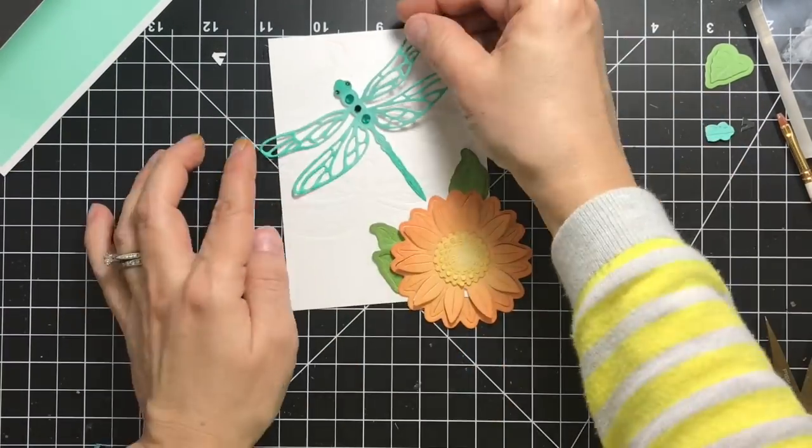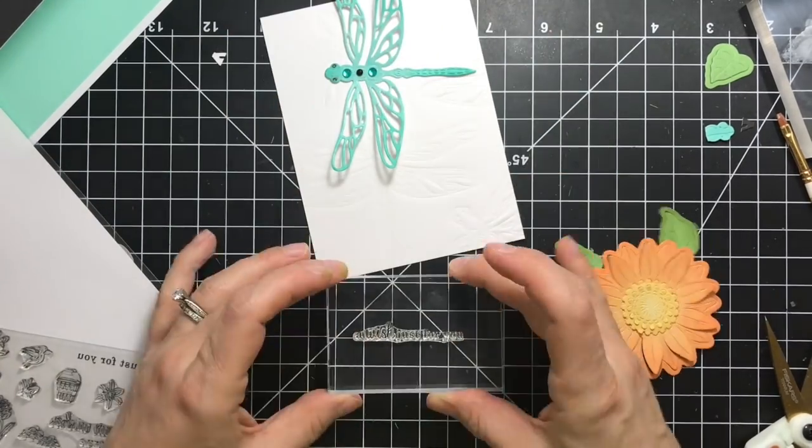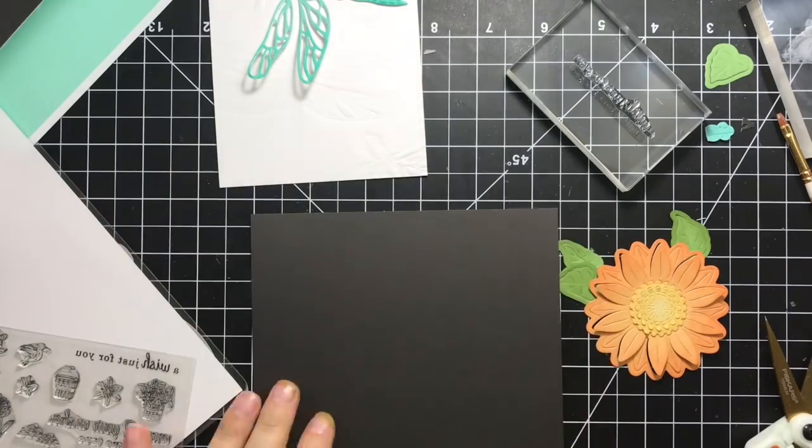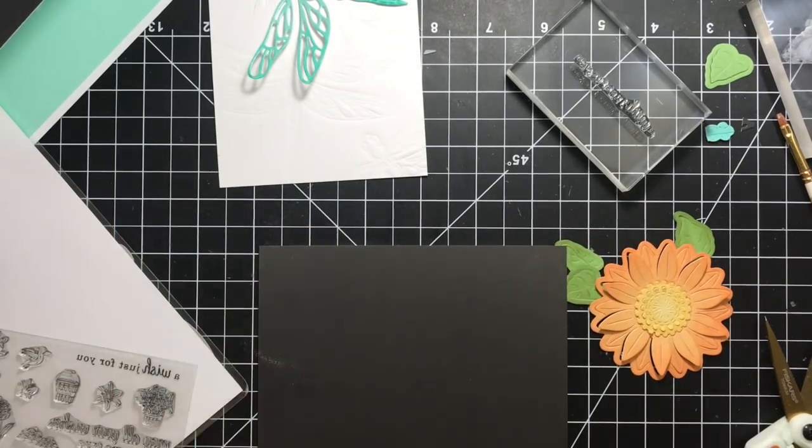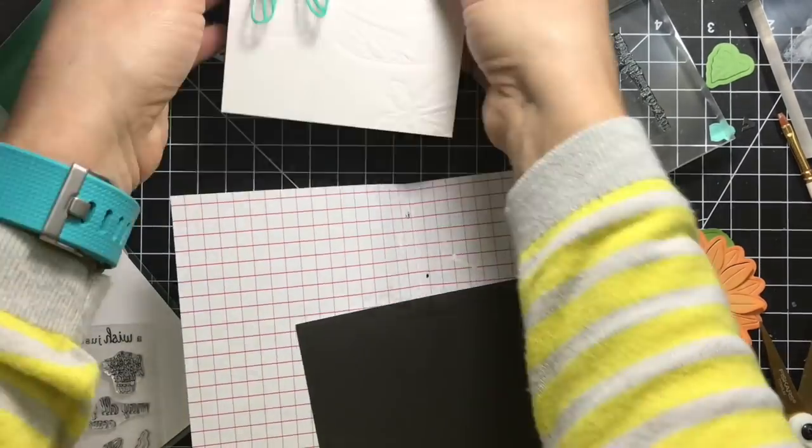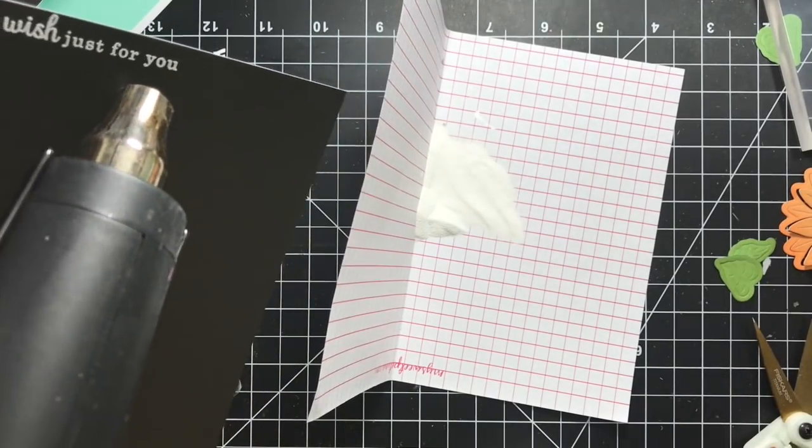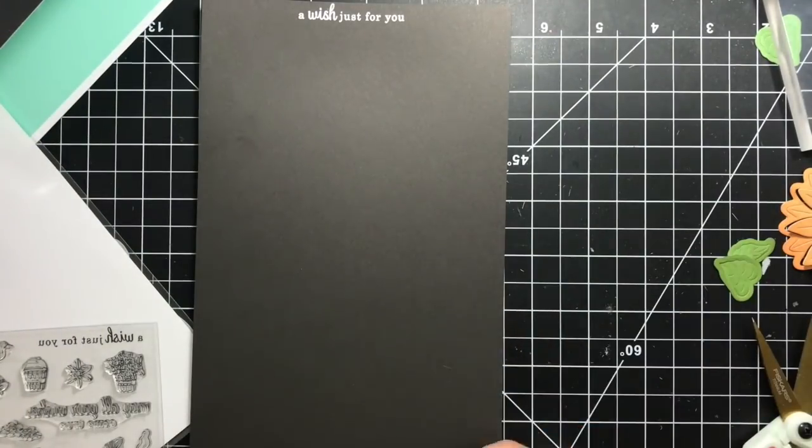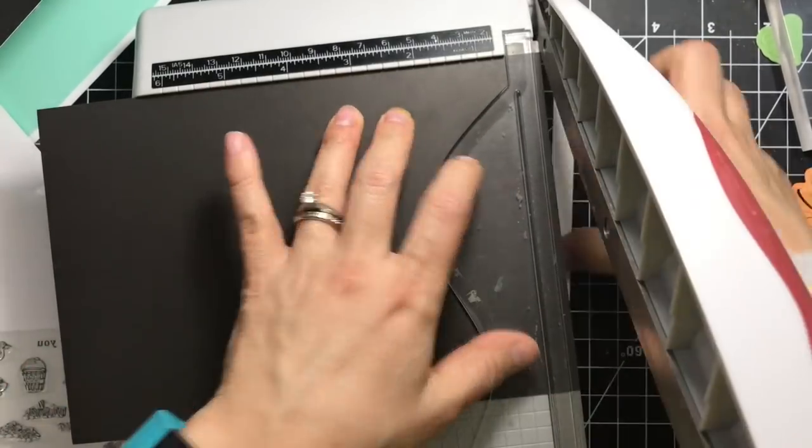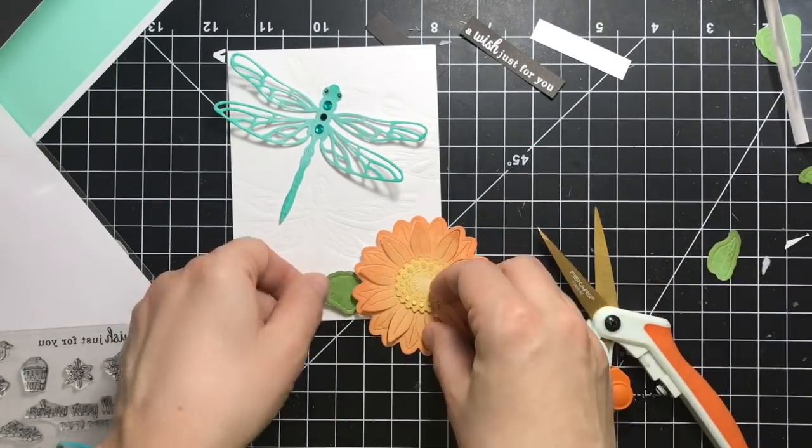Next I'm stamping a sentiment from the wishing well stamp set onto black layering paper. I use Versamark and I'm applying some detailed white embossing powder and heat setting it. Using my paper trimmer I'll trim this to a very thin strip and trim off the ends.